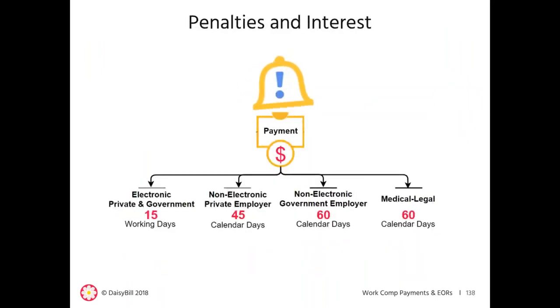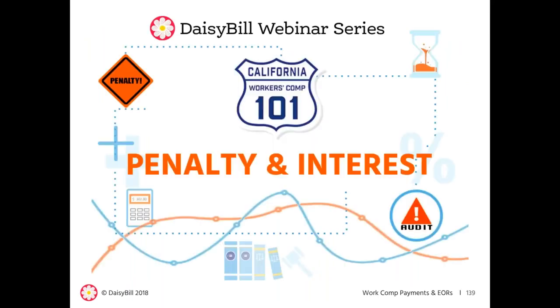So what happens when these payment deadlines are not met? That's when penalties and interest are due. Later on in the Workers' Comp 101 series, we'll give a webinar on how penalties and interest work.